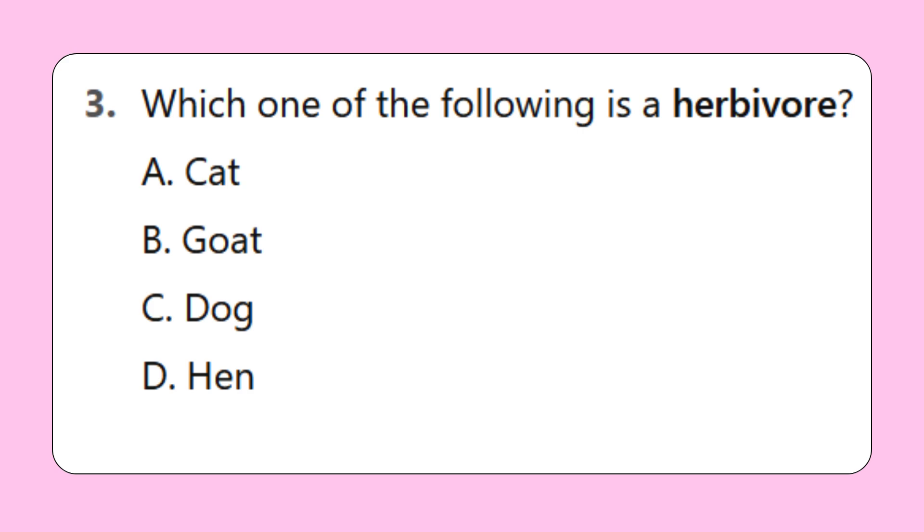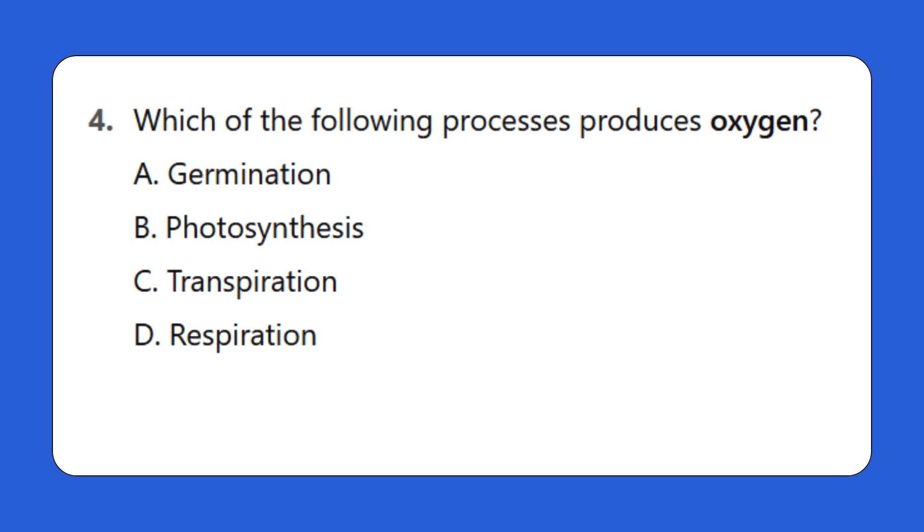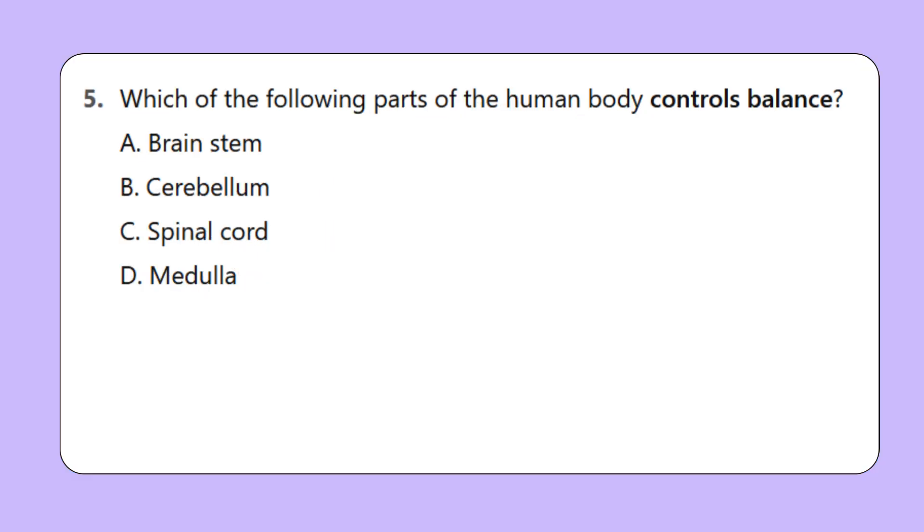Question 3: Which one of the following is a herbivore? A. Cat, B. Goat, C. Dog, D. Hen. Question 4: Which of the following processes produces oxygen? A. Germination, B. Photosynthesis, C. Transpiration, D. Respiration. Question 5: Which of the following parts of the human body controls balance? A. Brain stem, B. Cerebellum, C. Spinal cord, D. Medulla.